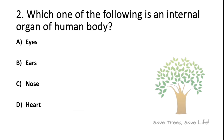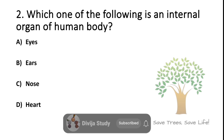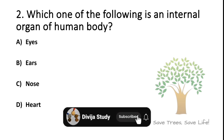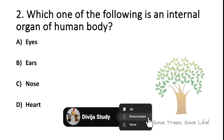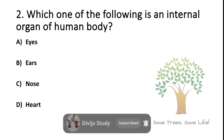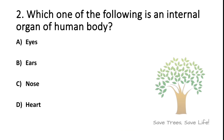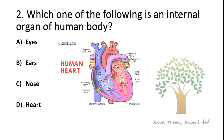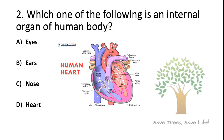Question number 2. Which one of the following is an internal organ of the human body? Option A: Eyes. Option B: Ears. Option C: Nose. Option D: Heart. So the answer is option D, Heart.